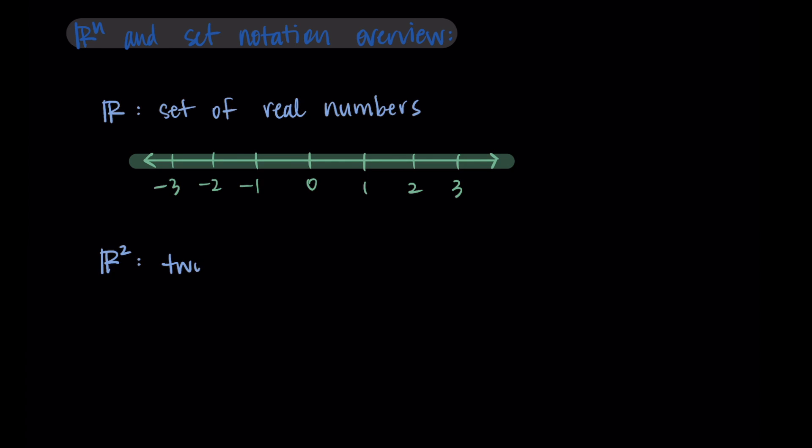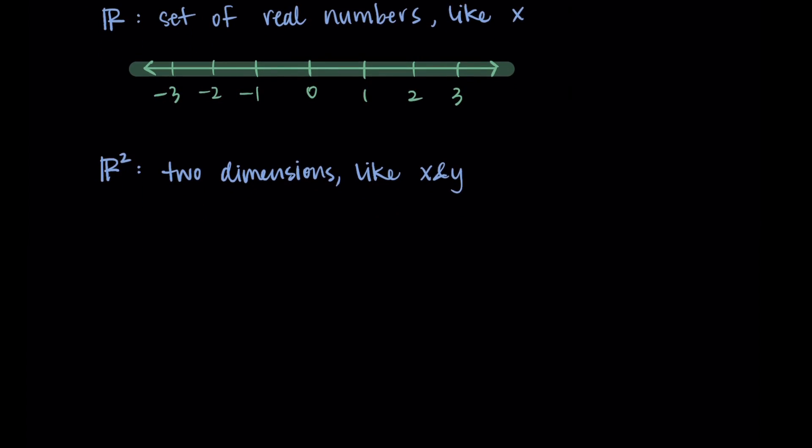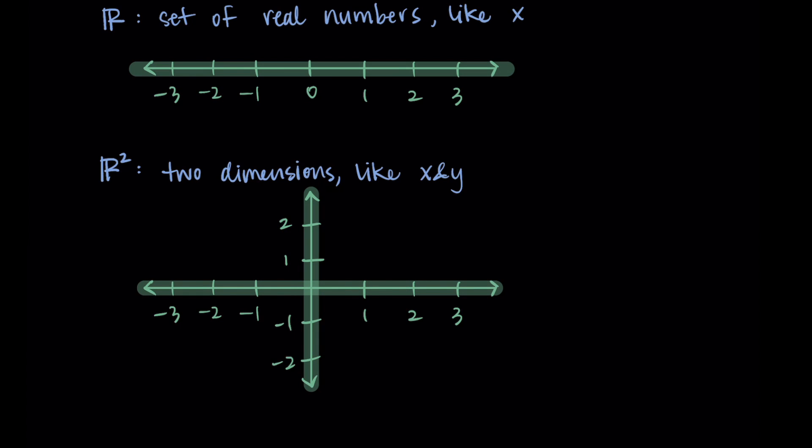Then we can start thinking of ℝ². So we put the two in the exponent position on this R and this starts to represent two dimensions. So instead of just having the real numbers on one number line, we add a second one. And so this would be like when we're used to looking at an xy plane. So again, we would label it sometimes just to know which part we're looking at, but we understand that this represents all the real numbers, not just the ones listed here, includes all the ones in between the numbers we've listed as well.